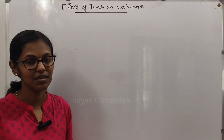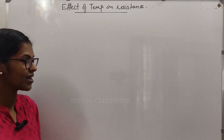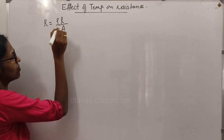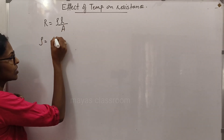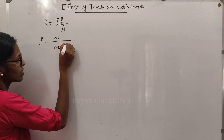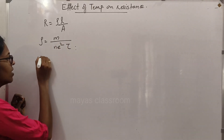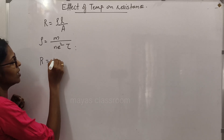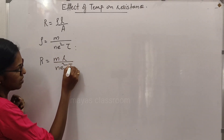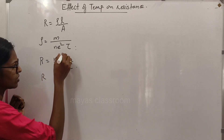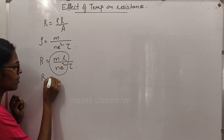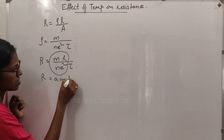In our class, we will talk about resistance and the equation. The resistance equation is R is equal to rho into L by A. Here, rho is equal to m divided by n e squared tau. Substituting this, R is equal to rho into L divided by n e squared tau. This part is constant, so R is equal to a constant divided by tau.